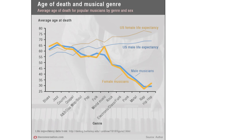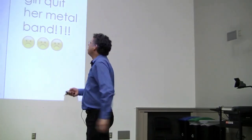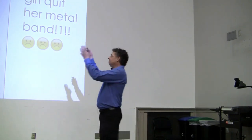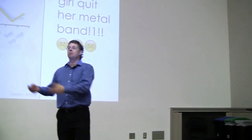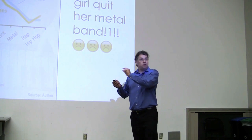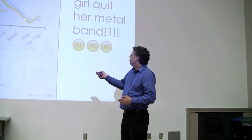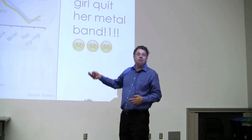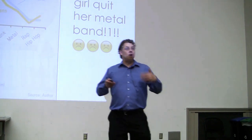When this went around on social media, there were tweets like 'Oh my god, I'm going to make my girl quit her metal band.' So the question is: does this really make sense? We talked earlier in the class about if something seems too good or too bad to be true, it probably is. I might not be so surprised if there was a small lifespan effect by genre. But hip-hop and rap musicians living half as long as country stars — I don't believe it. So right away I'm thinking this has got to be wrong. Why is this wrong?